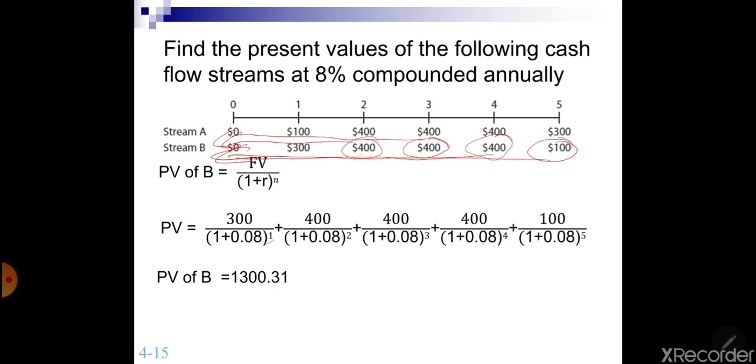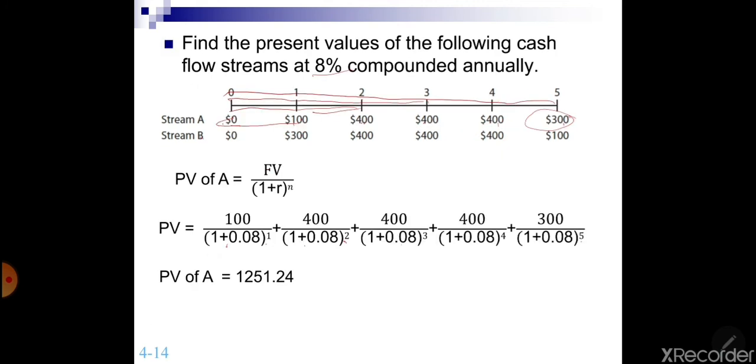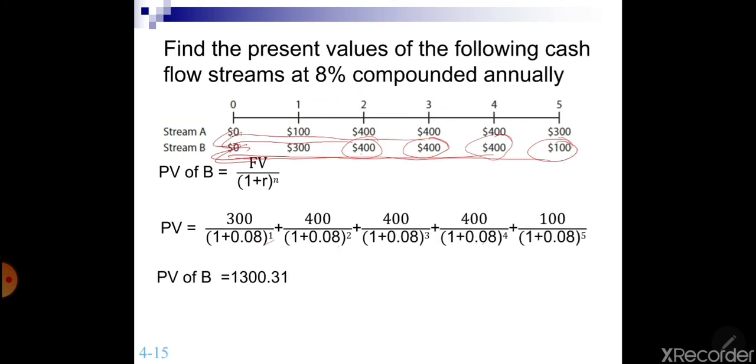So out of both of the cash flows, which one has a higher present value? This one has a present value of 1251 and this one has a present value of 1300. So this one has a higher present value. If this is a cash flow stream of income, you would prefer the higher present value.